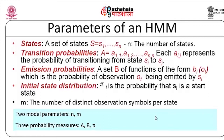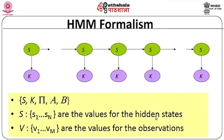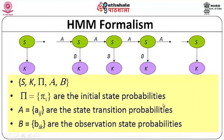The two model parameters are N, the number of states, and M, the number of distinct observation symbols per state. There are three probability measures: A, the transition probability; B, the emission probability of an observation symbol from state SI at time t; and pi, the initial state distribution — the probability that state SI is the initial state. These are the parameters of an HMM, often written as lambda = (pi, A, B).